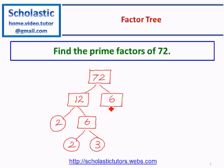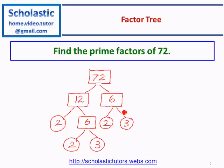The remaining 6 here can be further factorized into two numbers: 2, a prime number, and 3. This finishes all the branches — these are the ends of all the branches of the factor tree.